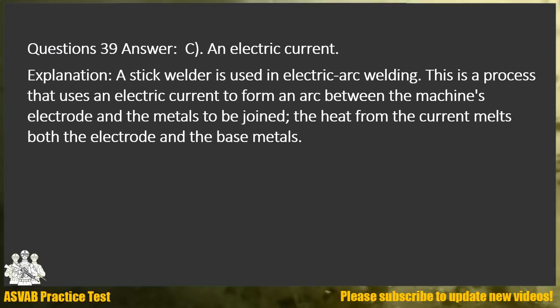Question 39. Answer C. An electric current. Explanation: A stick welder is used in electric arc welding. This is a process that uses an electric current to form an arc between the machine's electrode and the metals to be joined. The heat from the current melts both the electrode and the base metals.